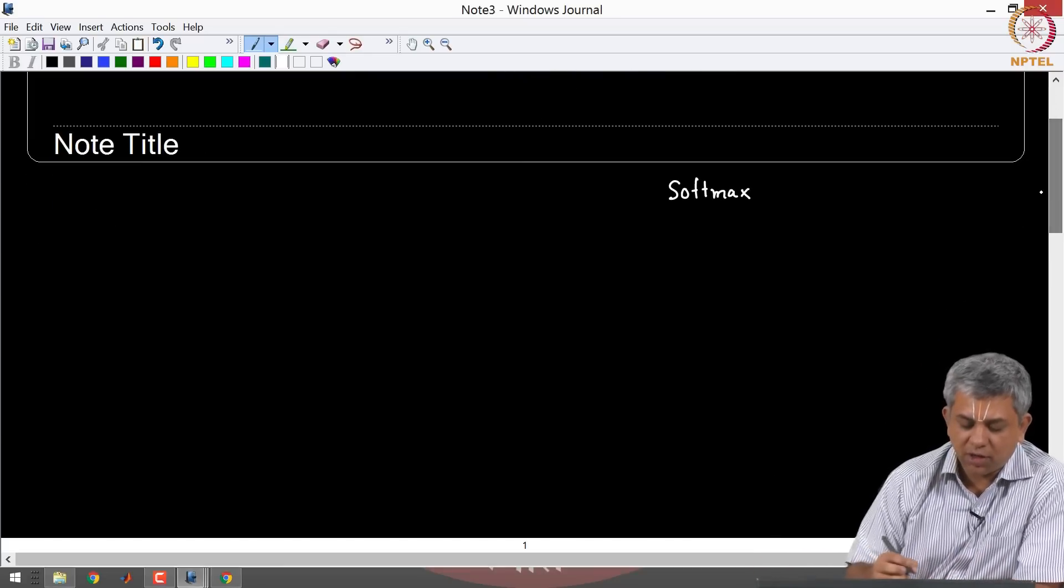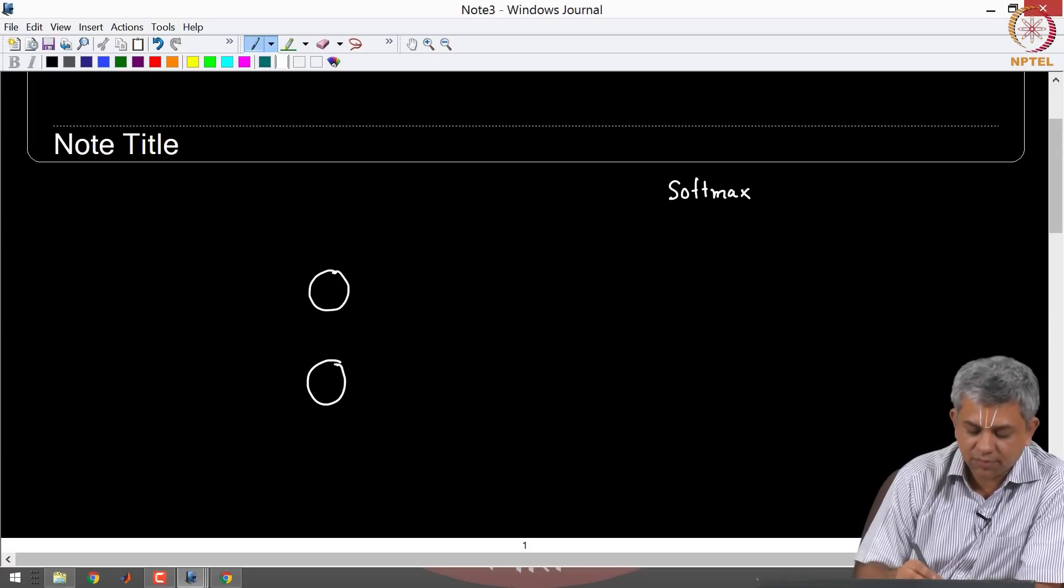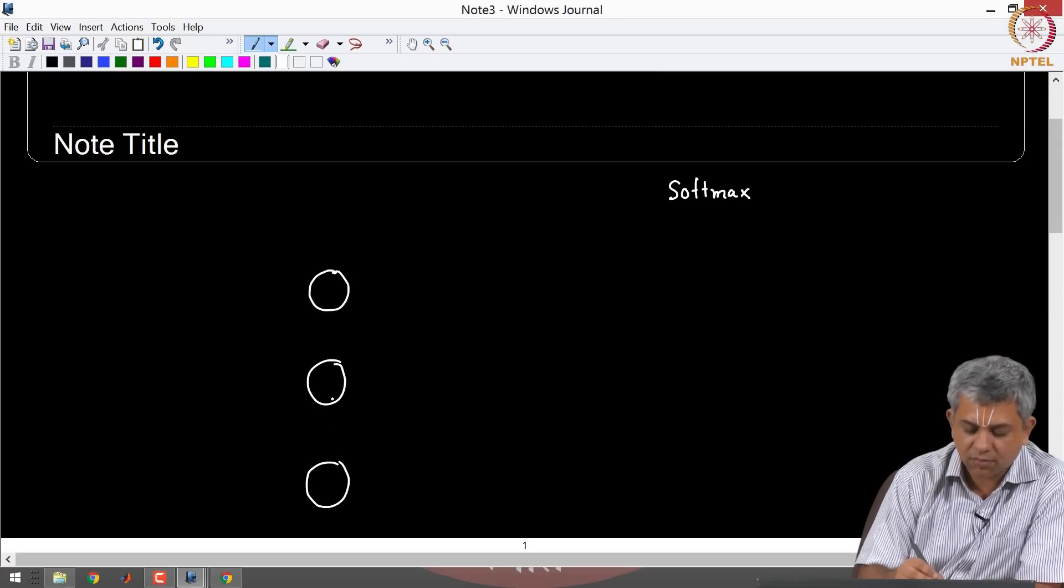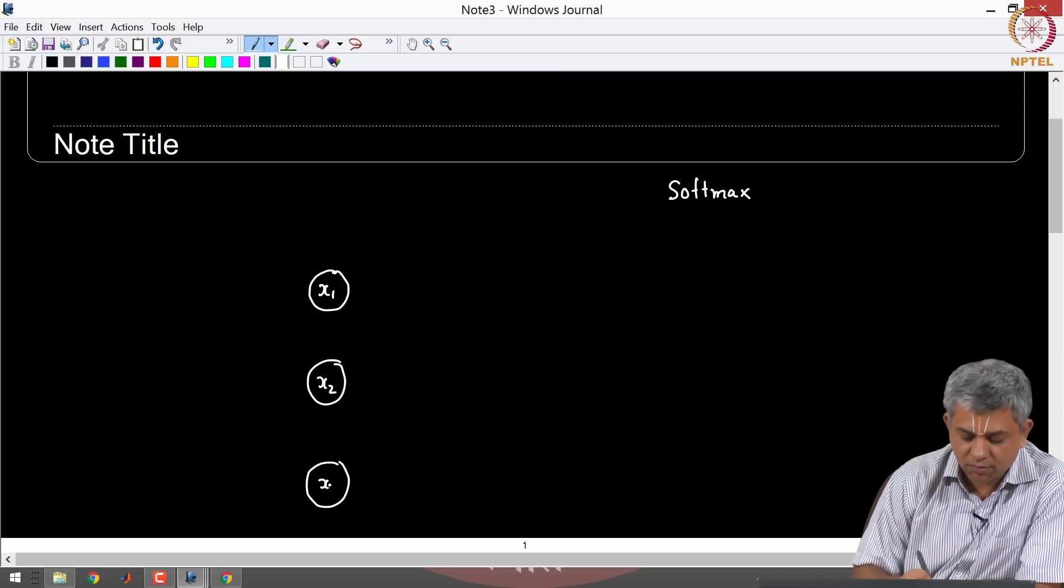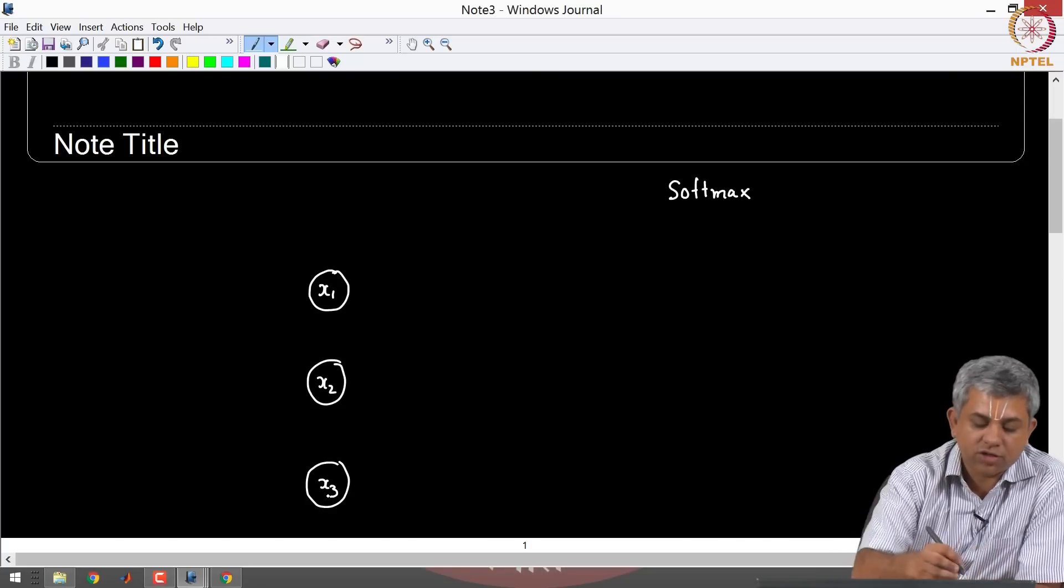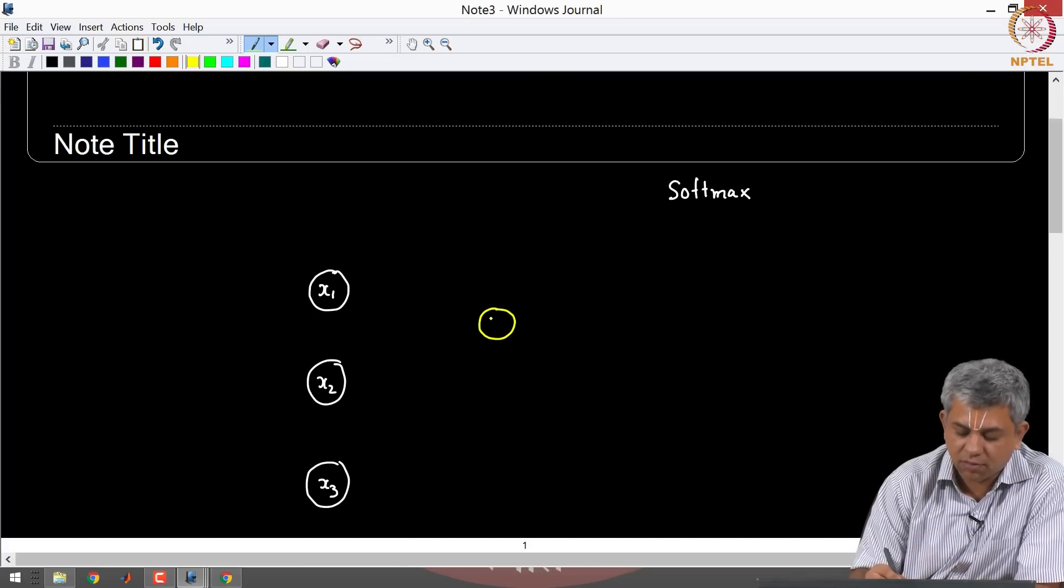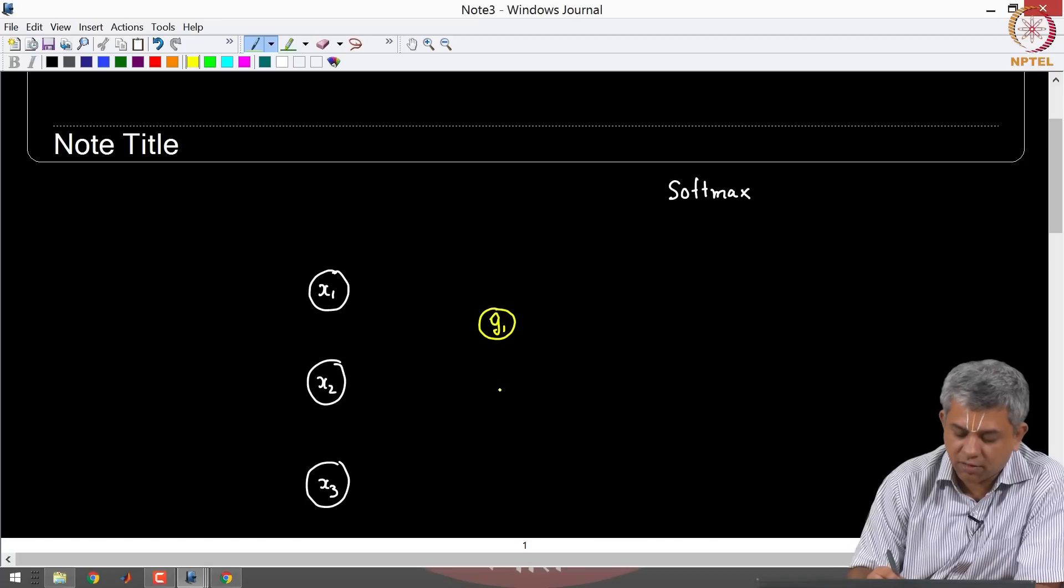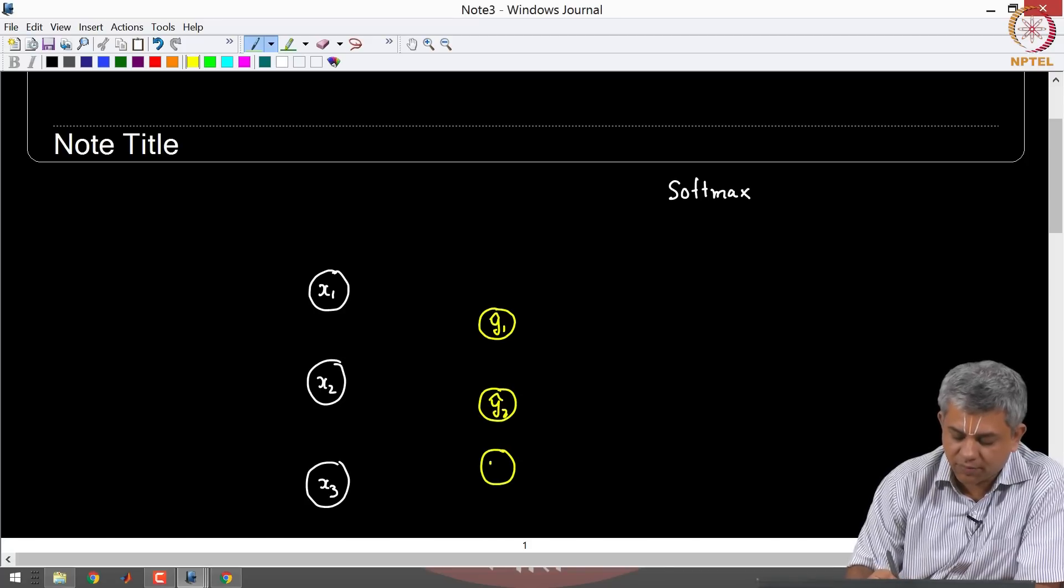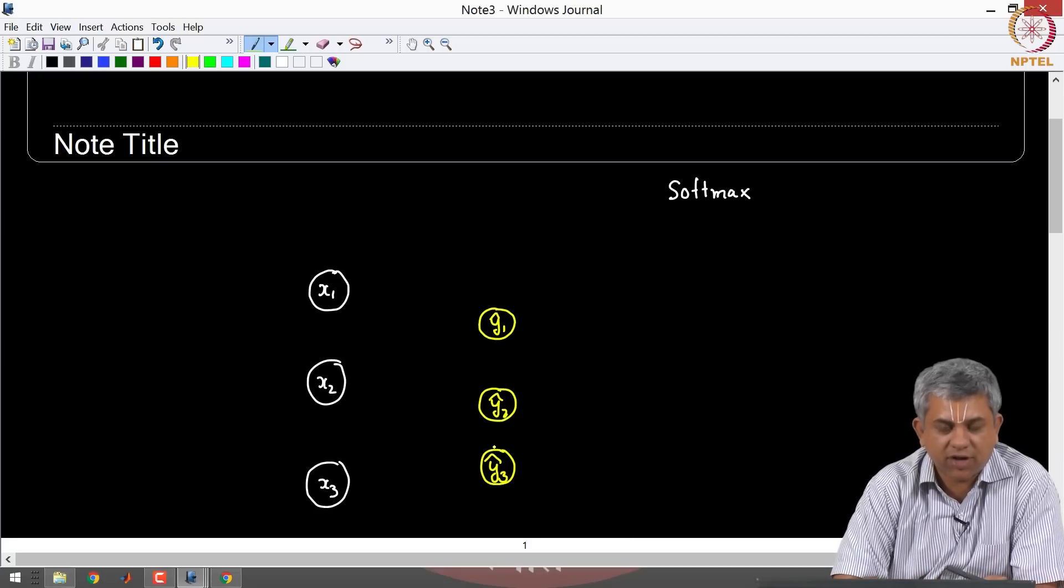So let us consider a simple example. Let us say I have three input features and let us say I have three output features also: Y1 hat, Y2 hat, Y3 hat. So let us say this is a three-class classification problem.